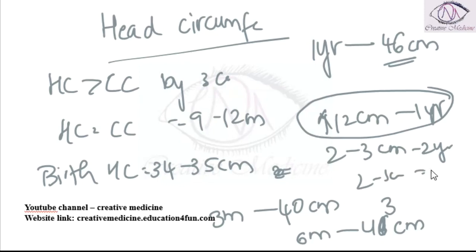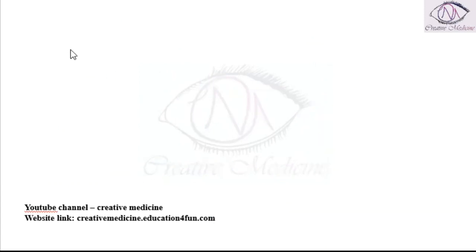After the third year, there is 0 to 1 cm per year increase until the adult head circumference is achieved.